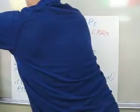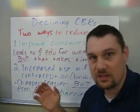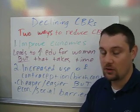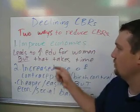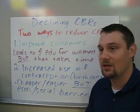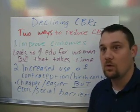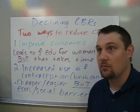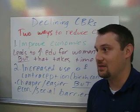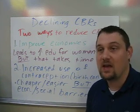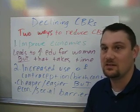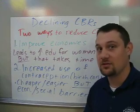Finally, let's look at declining CBRs — how do you decrease the birth rate? Many LDCs struggle with this because they have a very high birth rate. There are two ways to reduce your CBR. One is to improve your economy. When you improve economic conditions, you have more money to educate women. When women become better educated, they can take a more prominent role in the workforce, have a choice in what they do, and often choose to have a job rather than a large family. The downside is this takes decades and many countries aren't patient for that.